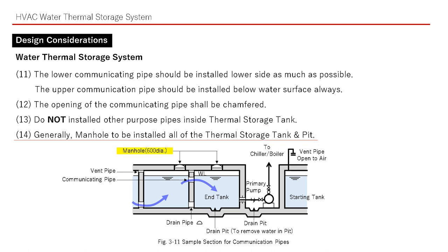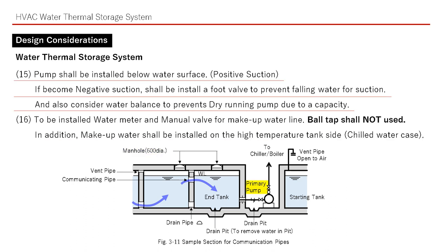Generally, a manhole shall be installed in all of the thermal storage tanks and pits. The pump shall be installed below the water surface — this is called positive suction. If it becomes negative suction, shall we install a foot valve to prevent falling water in the suction line. Also consider water balance to prevent dry running of the pump due to the gap in capacity.